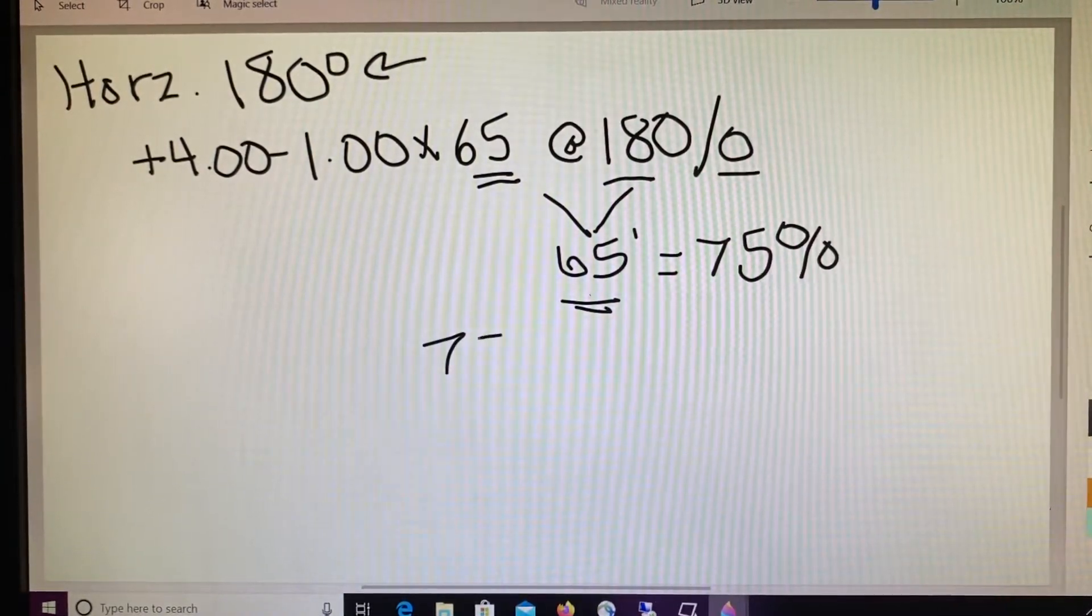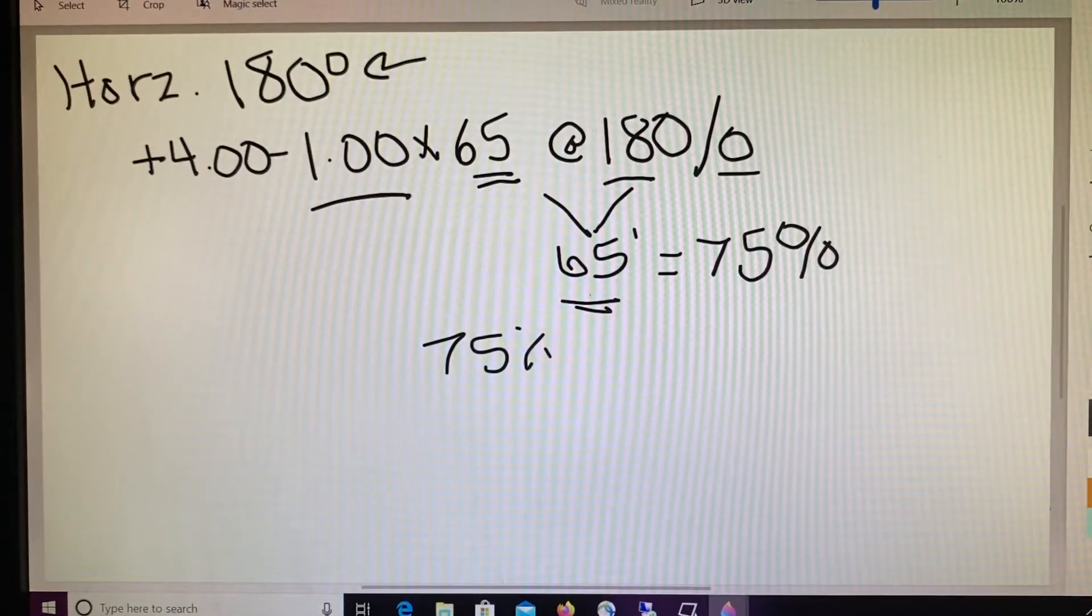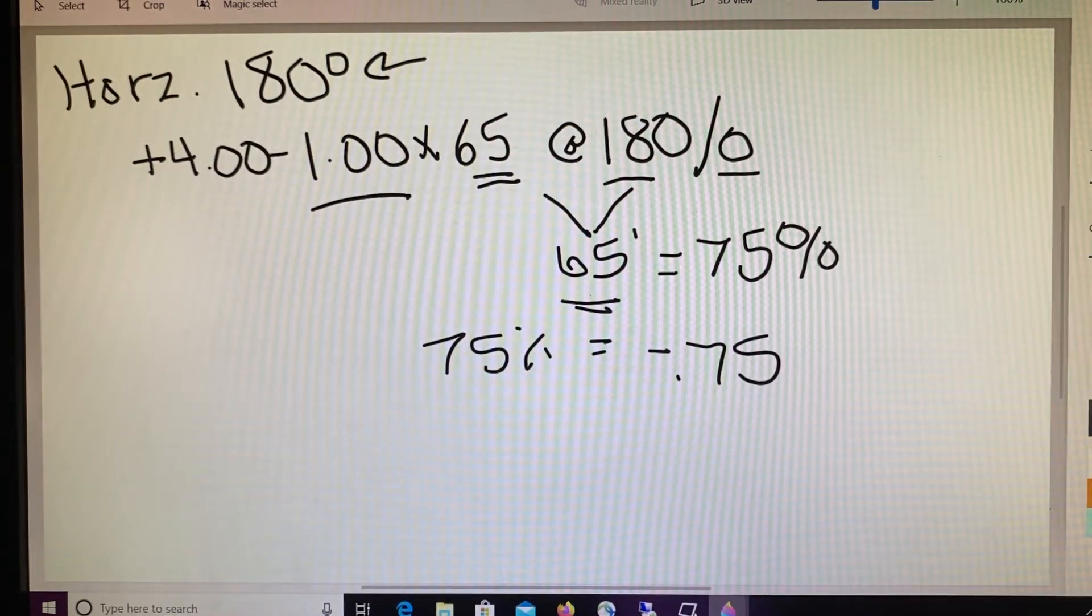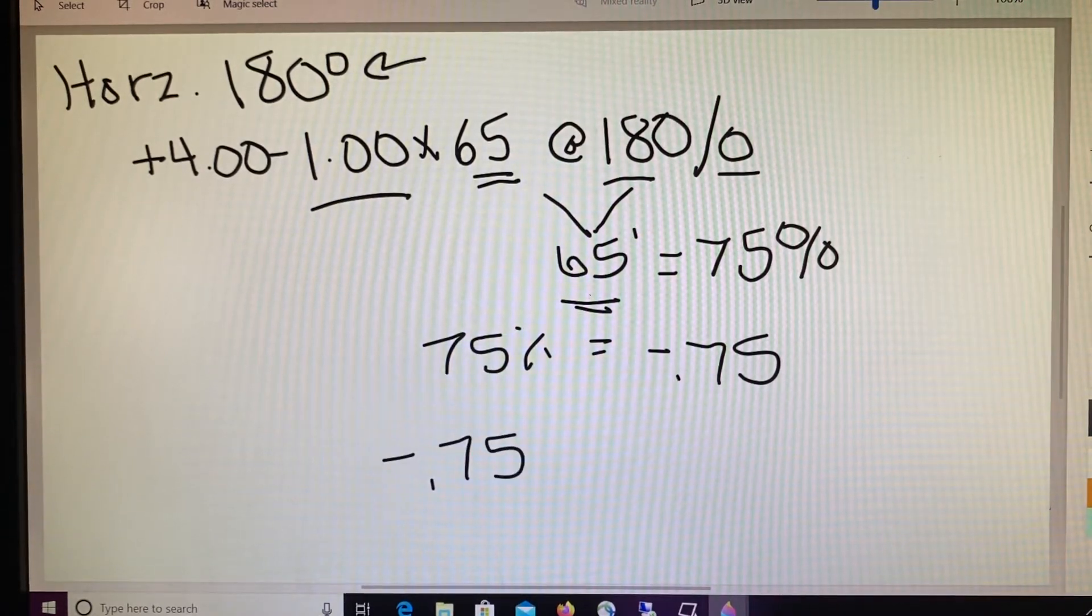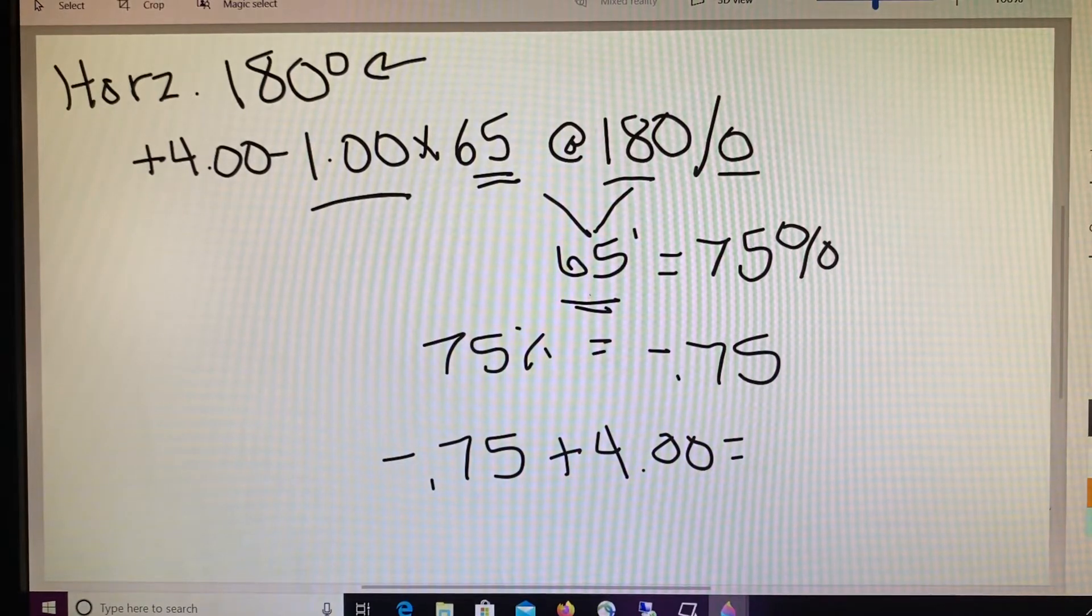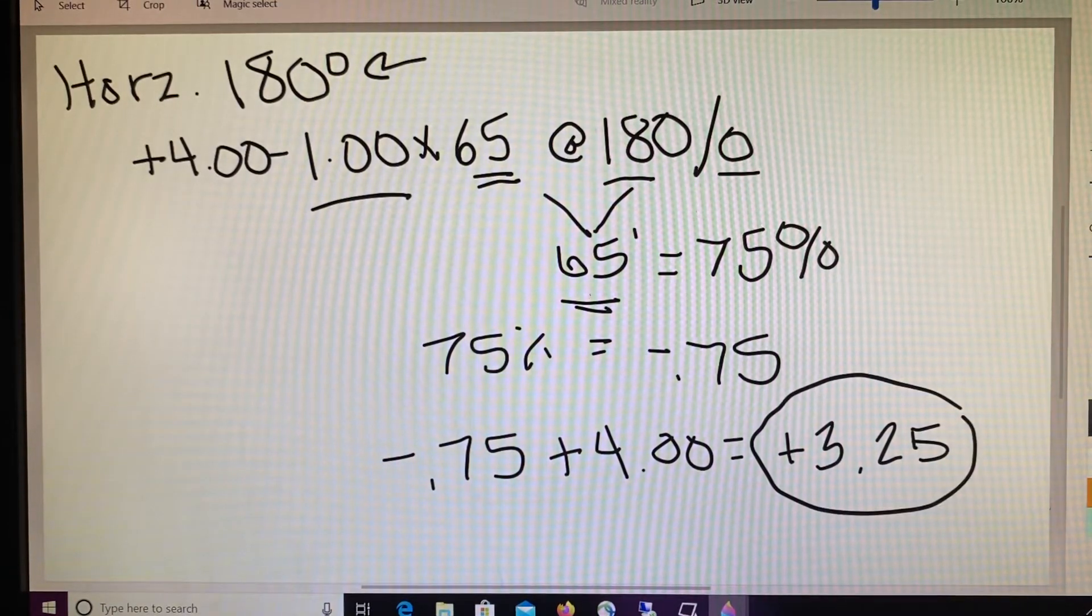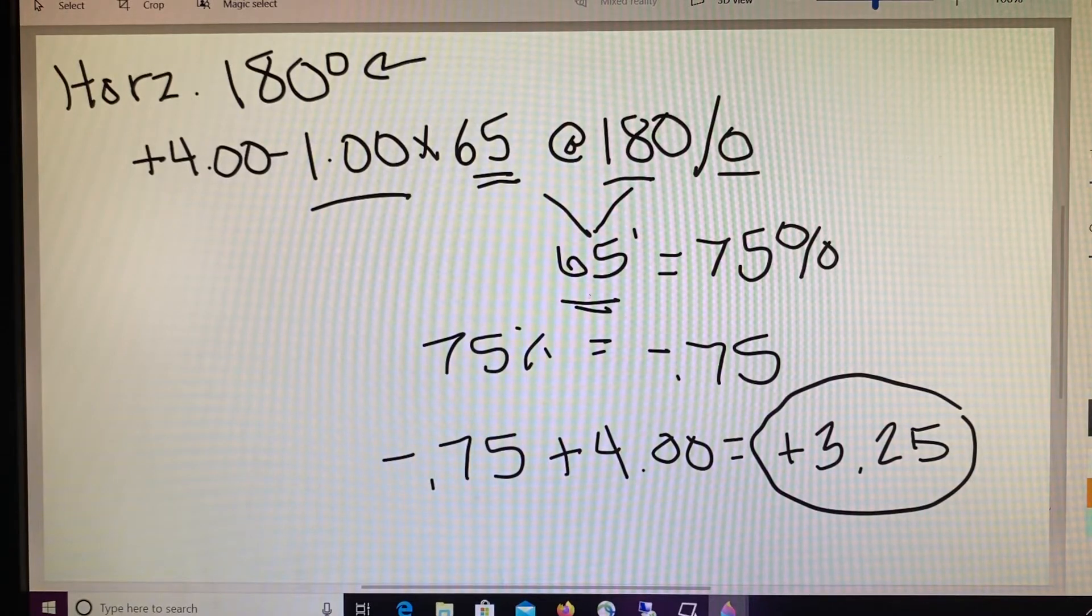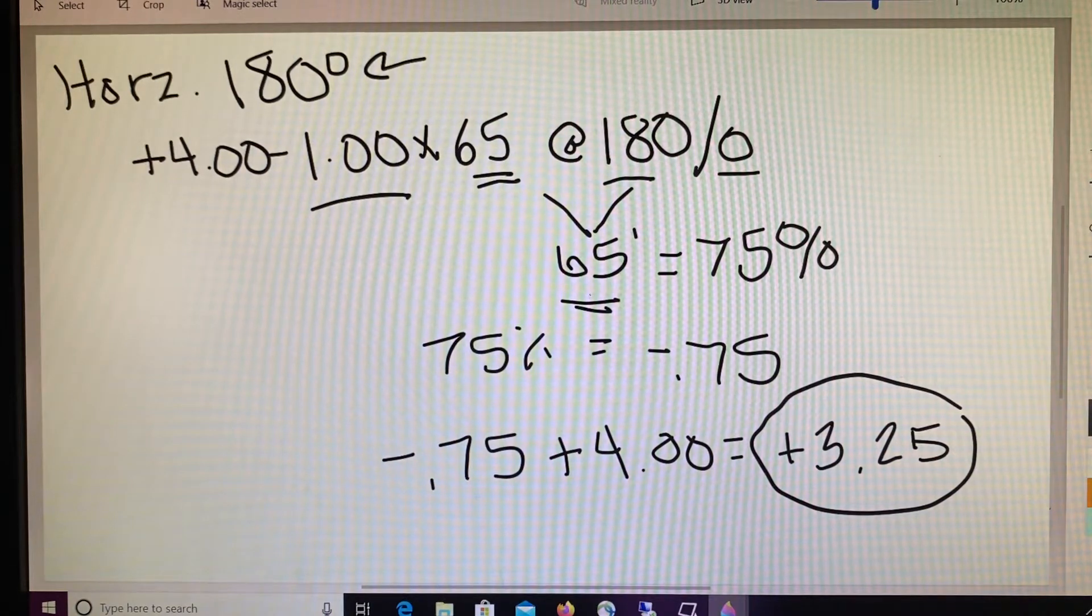So 75% of our minus 1 is equivalent to a minus 0.75. Then we're able to take that minus 75, that third step of finding power in our requested meridian, and combine that with our sphere power, which in this equation is plus 4. So we have a minus 75 plus 4. That's going to equal plus 3.25. This becomes the first piece of information that we need to determine our power or the amount of prism created by this error.